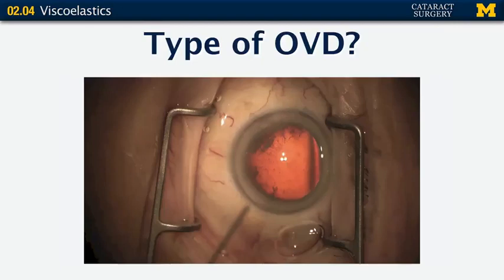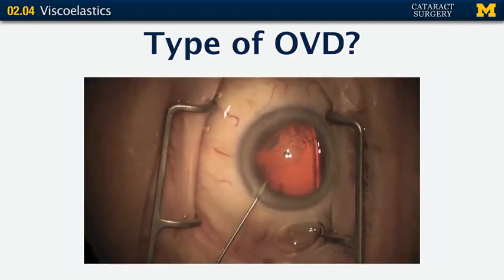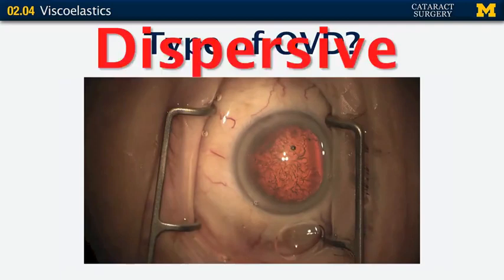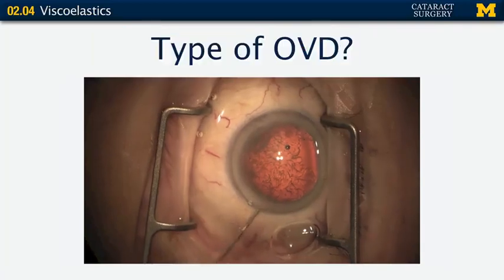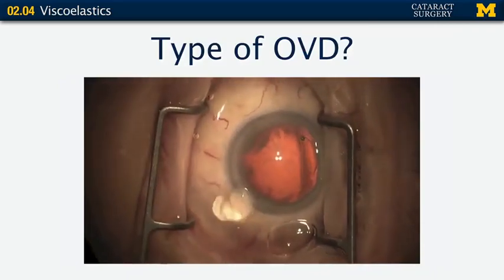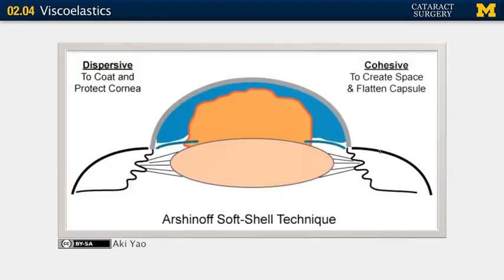Let's continue with the quiz using video. Tell me what type of viscoelastic agent you believe is being injected in the anterior chamber. If you said dispersive, you'd be correct — notice how it goes in in a squiggly chain-like manner and not as one big glob. As opposed to the cohesive, which goes in as one big glob. Usually a dispersive and cohesive agent are used together in the soft shell technique — the cohesive is injected after the dispersive to push the dispersive agent up next to your corneal endothelium, because the main object of the dispersive is to coat and protect.